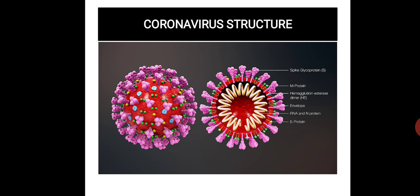The structure of coronavirus includes spikes, glycoproteins, M-proteins, hemagglutinin proteins, an envelope, RNA, N-proteins, and E-proteins, as shown in the figure.